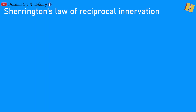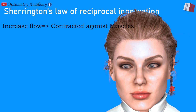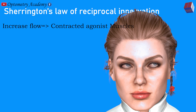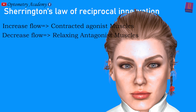Sherrington's Law of Reciprocal Innervation states that during ocular motility, an increased flow of innervation to the contracting agonist muscle is accompanied by a decreased flow of innervation to the relaxing antagonist muscle.